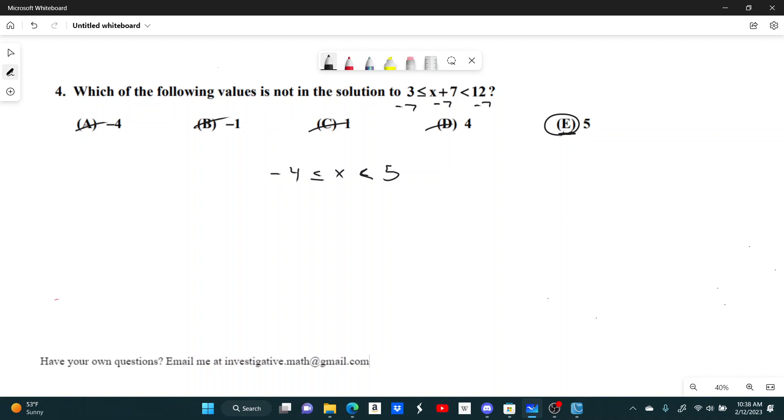Instead of saying less than or equal to 5. So if this said less than or equal to 5, we would use this. But since it's just less than, 5 is not less than 5. And so we get answer choice E.